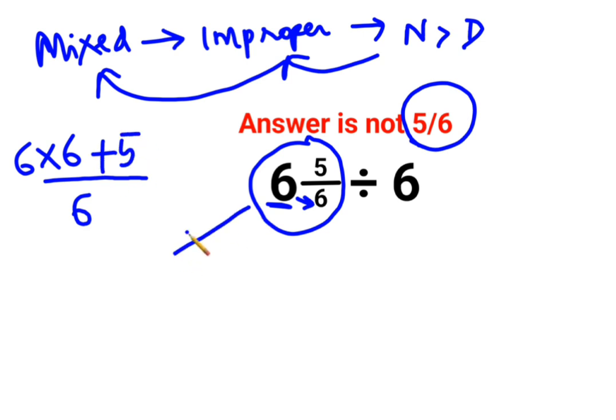So this actually becomes 36 plus 5 that is 41 upon 6 divide by 6. Now whenever you have division, you will follow the rule of KCF where K stands for keeping the first fraction as it is.